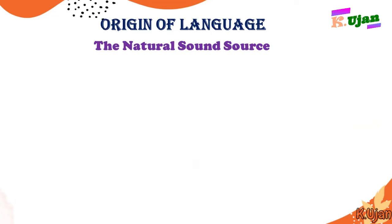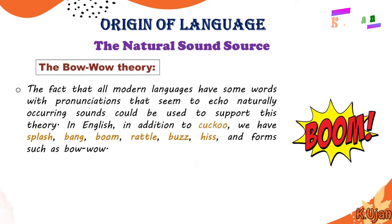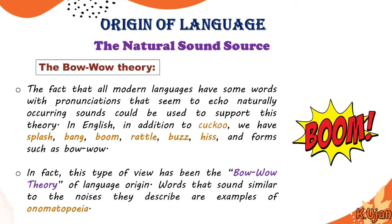The second source of origin of language is the natural sound source. Within this source there is the Bow-Wow theory. All modern languages have some words whose pronunciations seem to echo naturally occurring sounds. In English, in addition to 'cuckoo,' we have 'splash,' 'bang,' 'boom,' 'rattle,' 'buzz,' and forms such as 'bow-wow.' Words that sound similar to the noises they describe are examples of onomatopoeia.